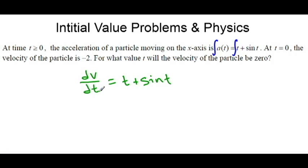And this is why we're allowed to take the antiderivative because we can multiply both sides by dt, yielding dv = (t + sin(t))dt.